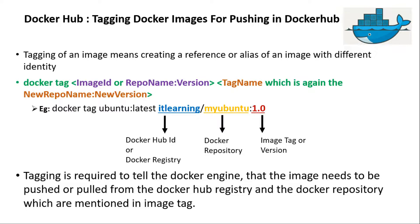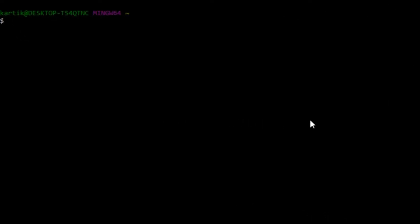The first thing which needs to be done to push the docker images to the Docker Hub registry is to log in to the Docker Hub account through the command line terminal. Let us go to the Docker Quick Start terminal and log in using the 'docker login' command.